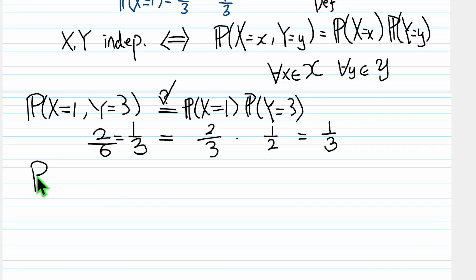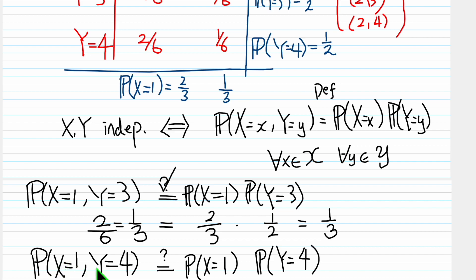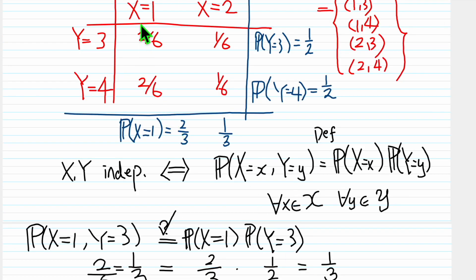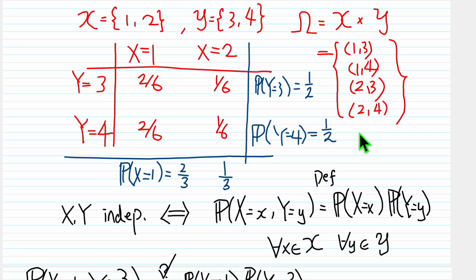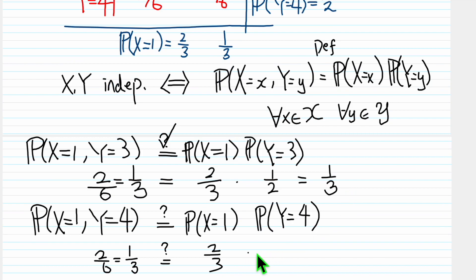So we need to check, is P(X=1, Y=4) the same as P(X=1) times P(Y=4)? So (X=1, Y=4), that means this 2/6, so 2/6, that means 1/3. Same as this thing: what's P(X=1)? 2/3. What's P(Y=4)? Half. So after simplification, this cancels out with this one, we get 1/3. This is true, good.